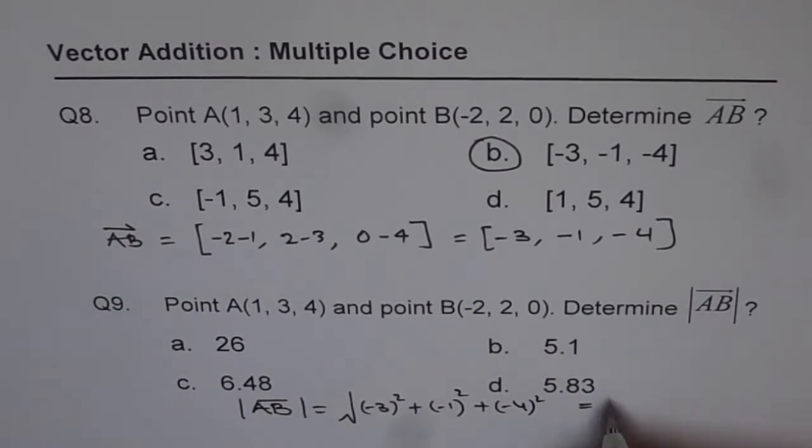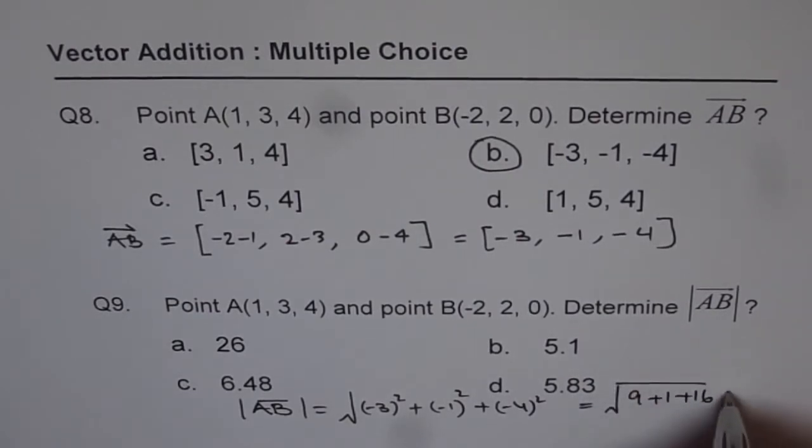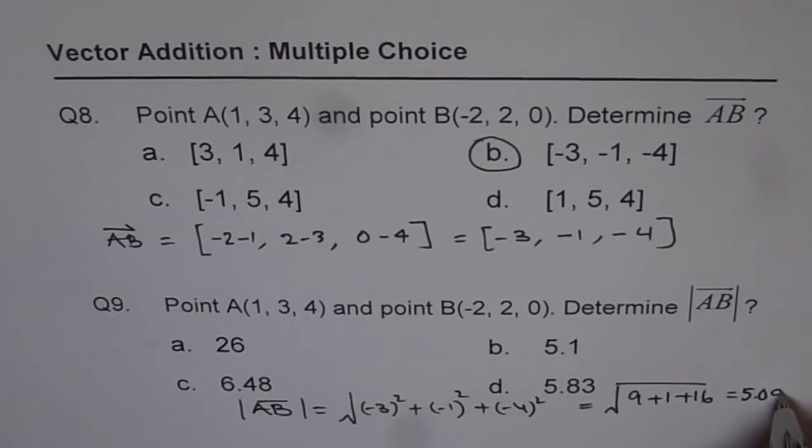Which equals, let's calculate. So it is basically 9 plus 1 plus 16 square root. So let's calculate the value, √26. So square root of 26 equals 5.09.